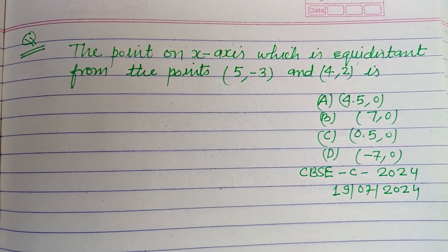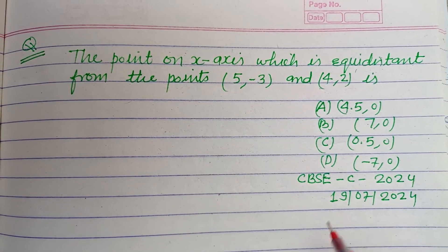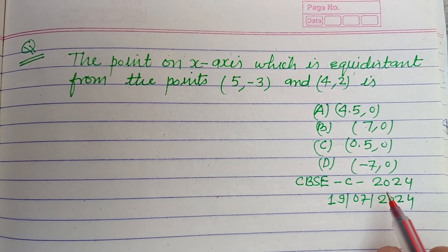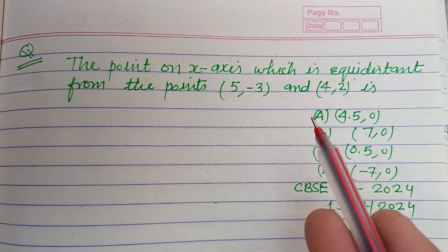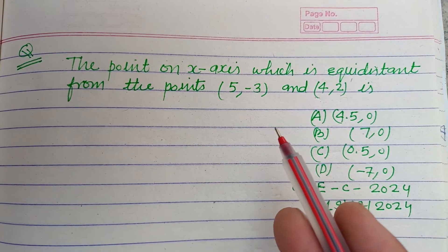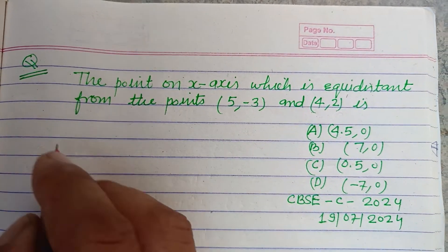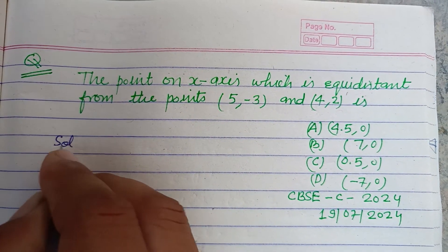Hello viewers, warm welcome to this YouTube channel. This is a question from CBSE compartment exam 2024: The point on x-axis which is equidistant from the points (5,-3) and (4,2) is...